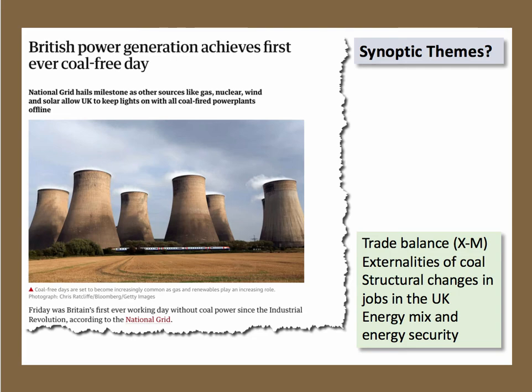What are some of the synoptic economic themes? There's obviously the issue of the trade balance — Britain is a net importer of coal now as domestic production has declined, so a fall in coal use might improve our trade balance. There are clearly externality issues and market failure issues as we move away from coal towards renewables. And there are structural changes in the labour market — most coal mining jobs have gone, and there's a risk of workers in coal power generation becoming structurally unemployed. Another macro-synoptic theme is the changing mix of energy in the UK.